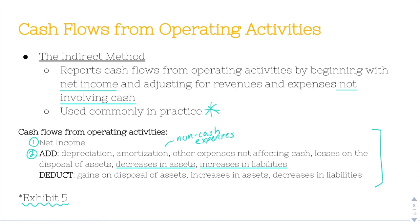That is all you would do for adding. Then the third step is deducting. You deduct gains on the disposal of assets — that's an increase that is non-cash, so we do the opposite and deduct the gain. Then you deduct increases in assets, and you deduct decreases in liabilities.